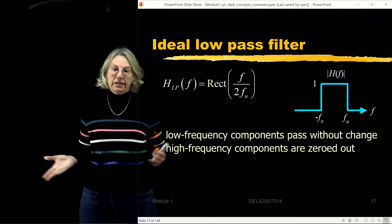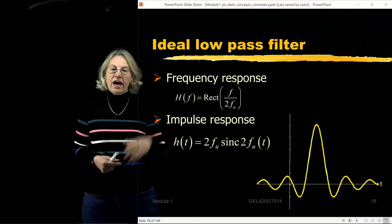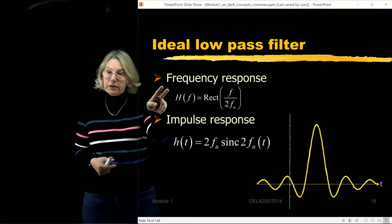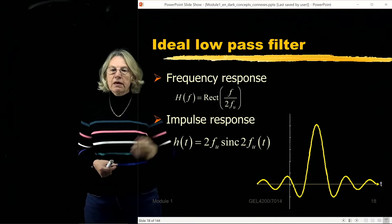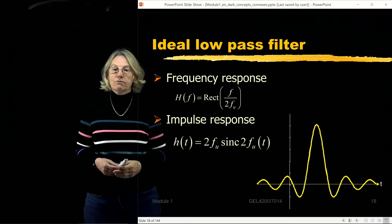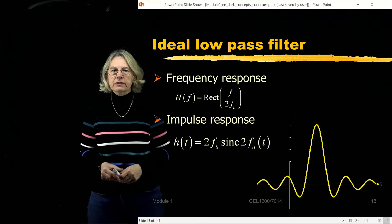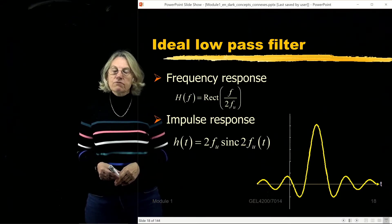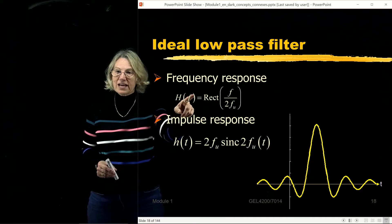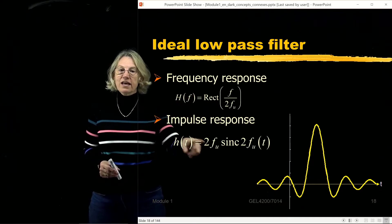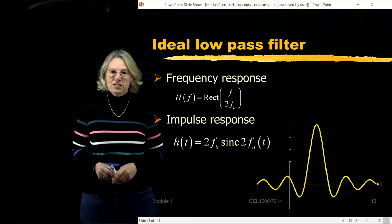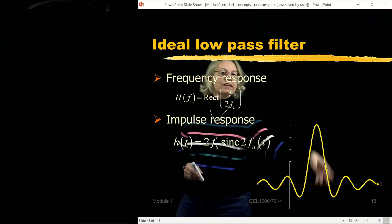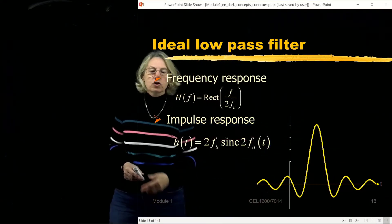The concept is simple: everything outside a certain frequency range is cut off, and everything inside is completely unaffected. We've seen the frequency response — a rectangle. The inverse Fourier transform of a perfect rectangle is a sinc function, so the impulse response of the ideal low-pass filter is a sinc function.